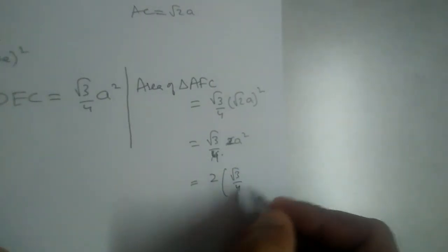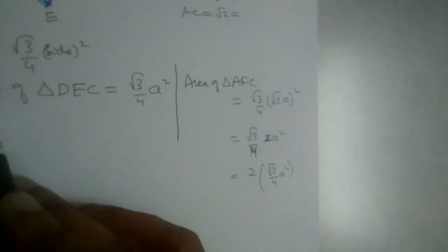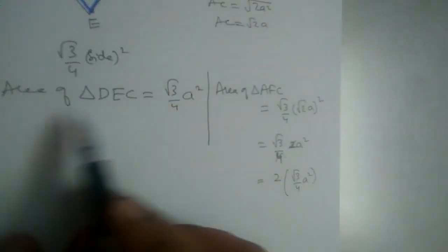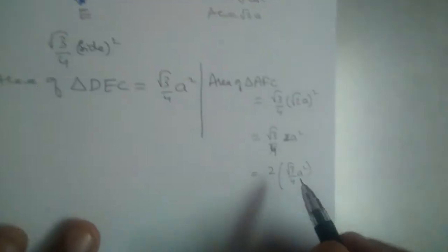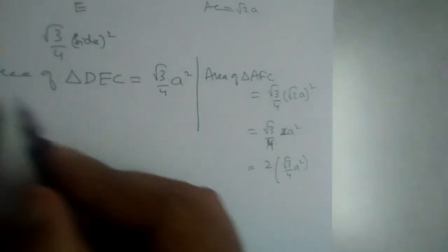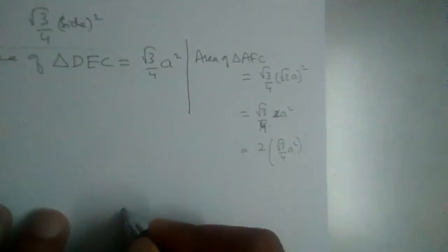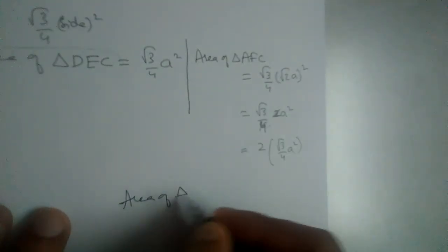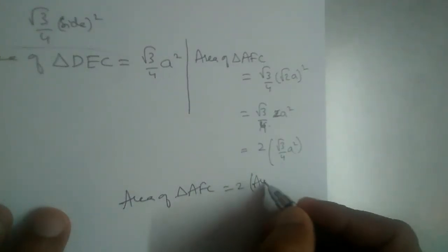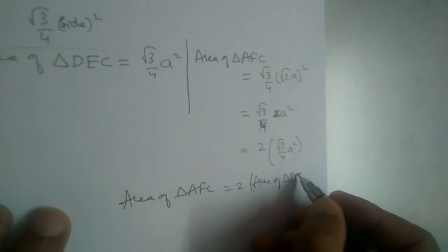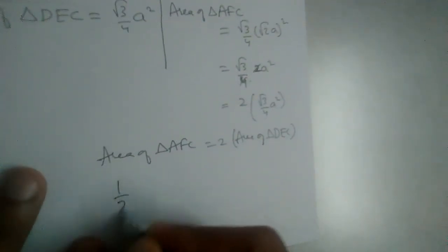This is (√3/4) × A². But what is (√3/4) × A²? It is the area of triangle DEC. So in place of (√3/4) × A², let us substitute the area of triangle DEC. Therefore, area of triangle AFC = 2 × area of triangle DEC. Sending the 2 to the other side, it becomes half.